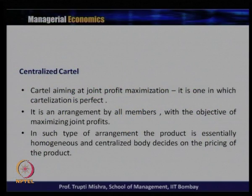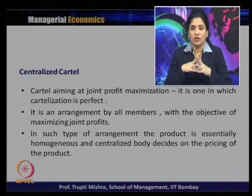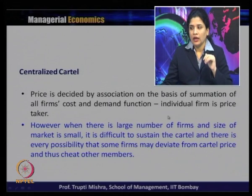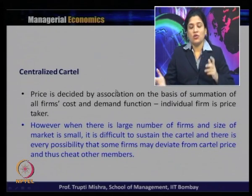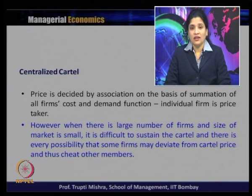A cartel aiming at joint profit maximization is one in which cartelization is perfect. It is an arrangement by all members to maximize profit; the product is essentially homogeneous and a centralized body decides pricing. Price is decided by the central agency on the basis of the summation of all firms' cost and demand functions. Individual firms are not price makers — they are price takers, accepting the price decided by the central agency.